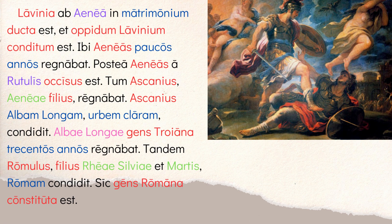'Tandem Romulus, filius Reae Silviae et Martis, Romam condidit' — finally Romulus, the son of Rea Silvia and Mars the god of war, founded Rome. This is a really important connection to understand. Then the last line: 'Sic gens Romana constituta est' — thus the Roman people were established. Constituta est is singular, referring to gens.